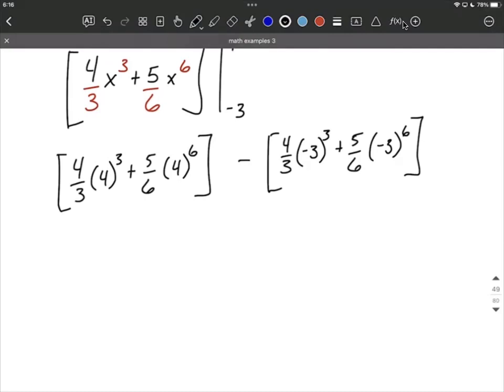So to simplify, what I'm going to do is go ahead and figure out 4 thirds, and then 4 cubed. Order of operations say work the exponent first, is going to be 64, plus 5 sixths, and I did not do this in my head. Got the calculator out to help me. 4 to the 6th power is 4,096.